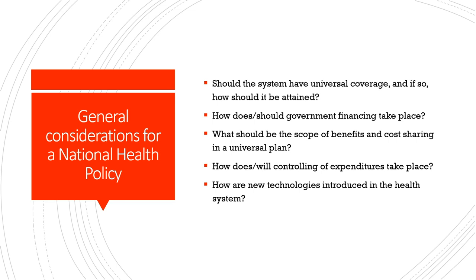In terms of general considerations for a national health policy, the first question is: should the system have universal coverage, and if so, how should it be attained? We have studied in earlier classes about health insurance coverage, issues of moral hazard and adverse selection, and the heterogeneities prevailing within a nation. Given the context of diversities and economic problems surrounding insurance, it is very relevant to ask whether a system should have universal coverage.